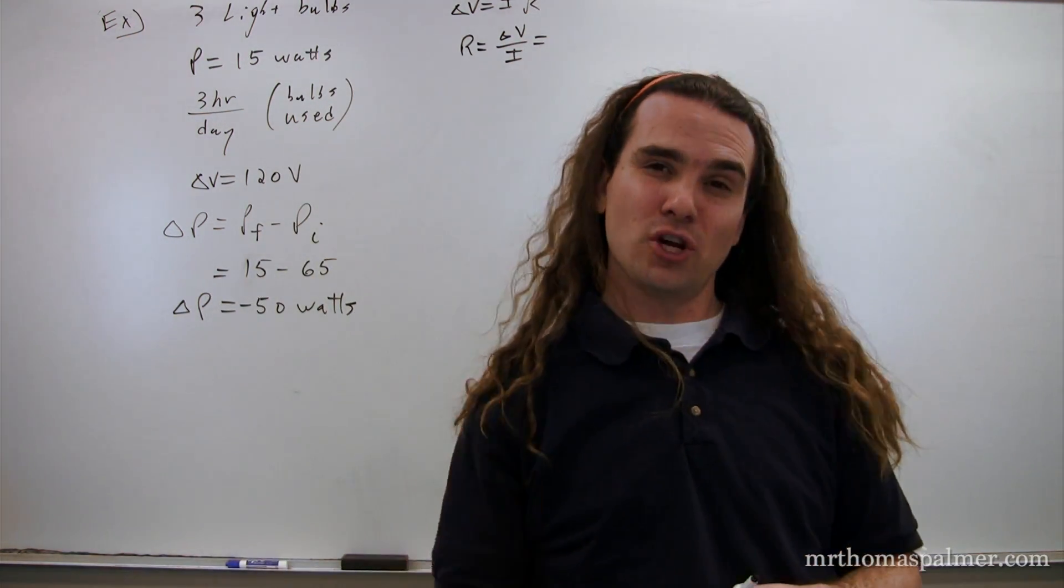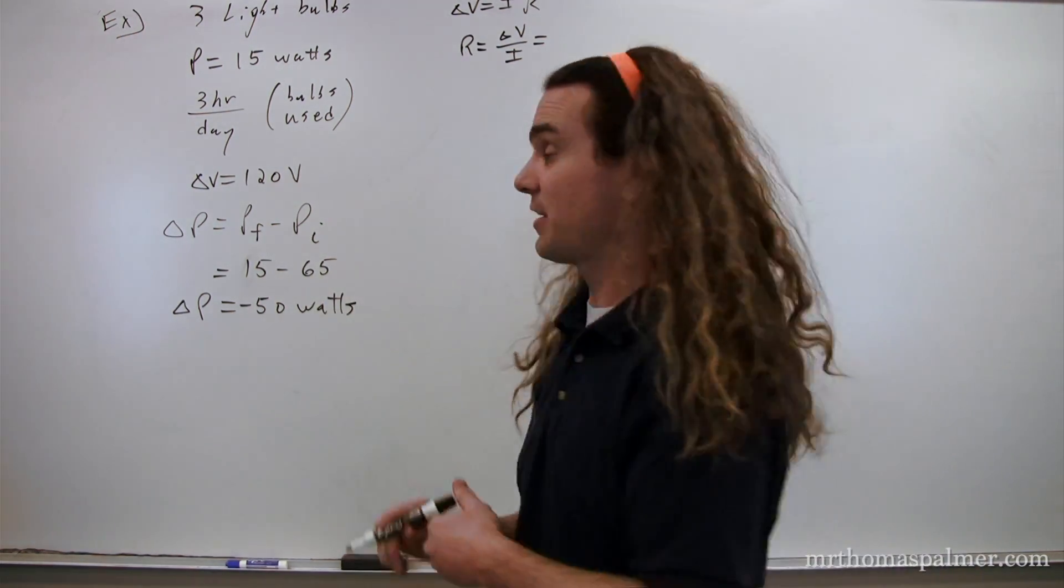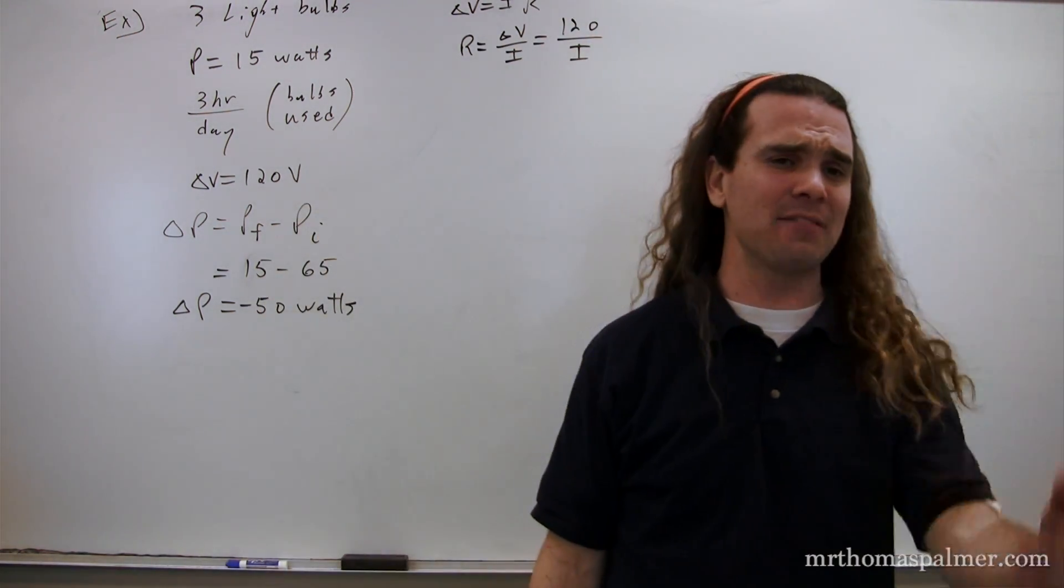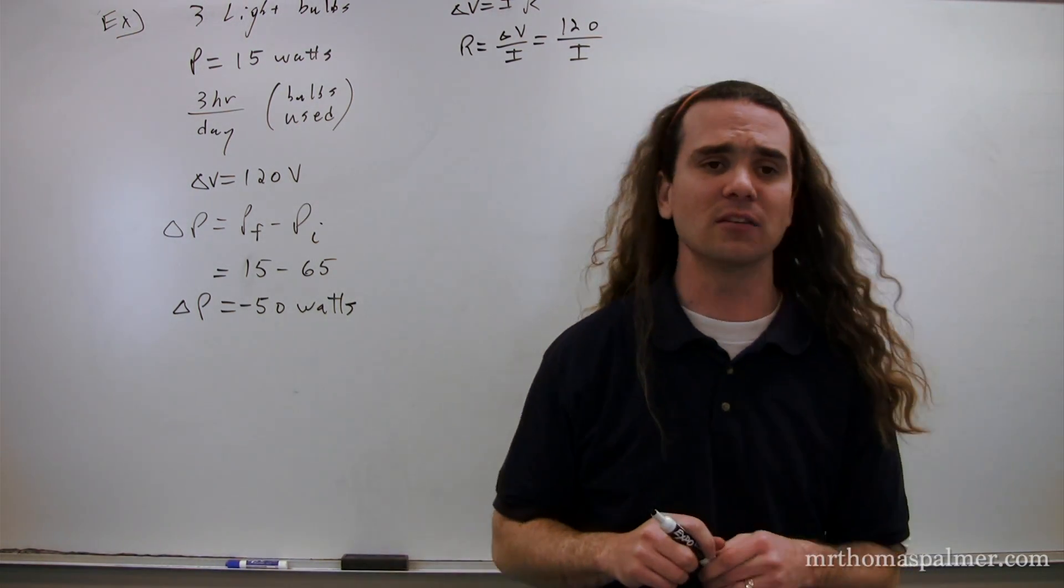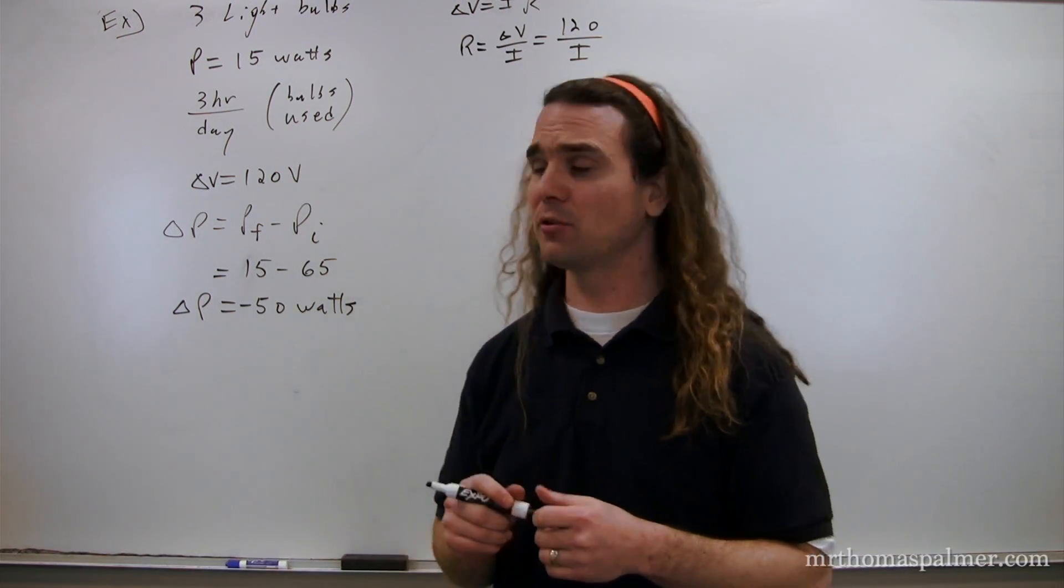But, unfortunately, we don't know the current. We know the electric potential difference, but we don't know the current. So, does anybody have any other ideas as to what we could use to figure out the resistance of one of these light bulbs? We could use the equation for electric power. Yep. That's right. We can use the equation for power. And if you remember, we have three different equations for power.